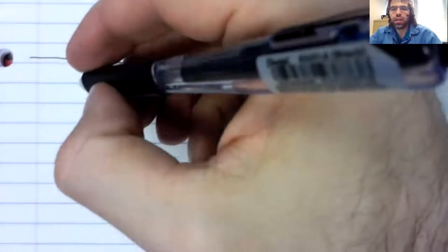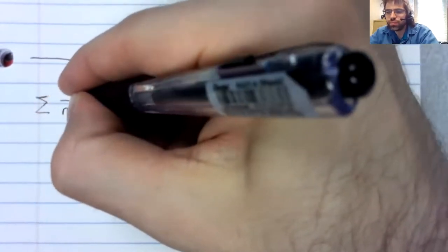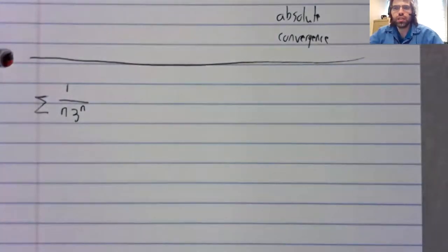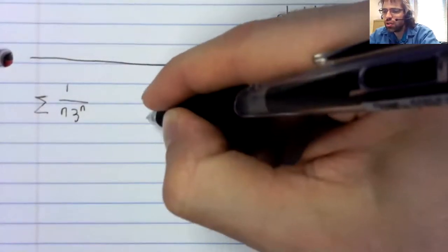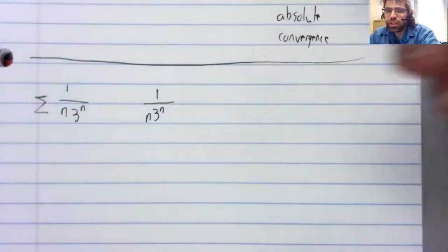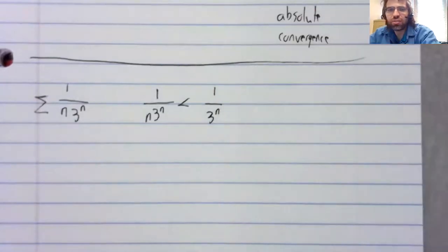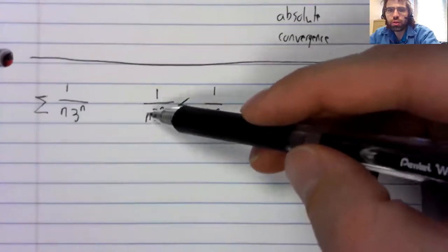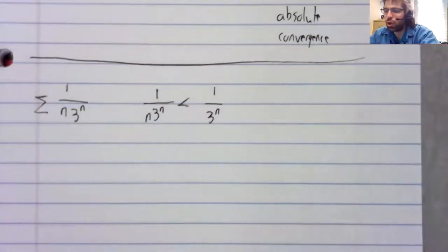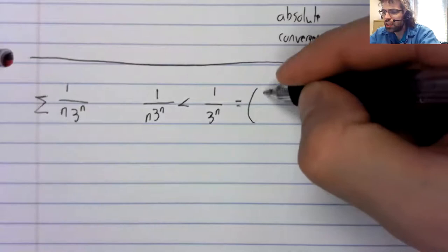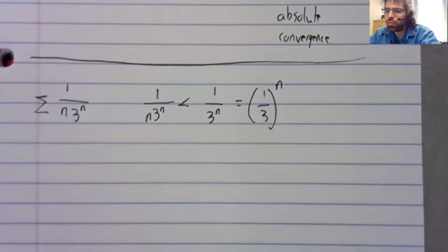Problem 11. There might be multiple ways of doing this, but what's crying out to me is that this is less than this. If you have a large number here in the denominator, it causes the fraction to be small. And 1 over 3 to the n is 1 third to the power of n.